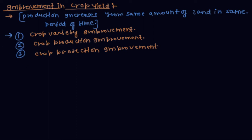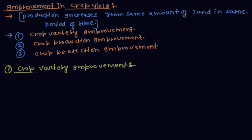Now let's discuss crop variety improvement. Crop variety improvement refers to the factors by which variety improvement can be done.